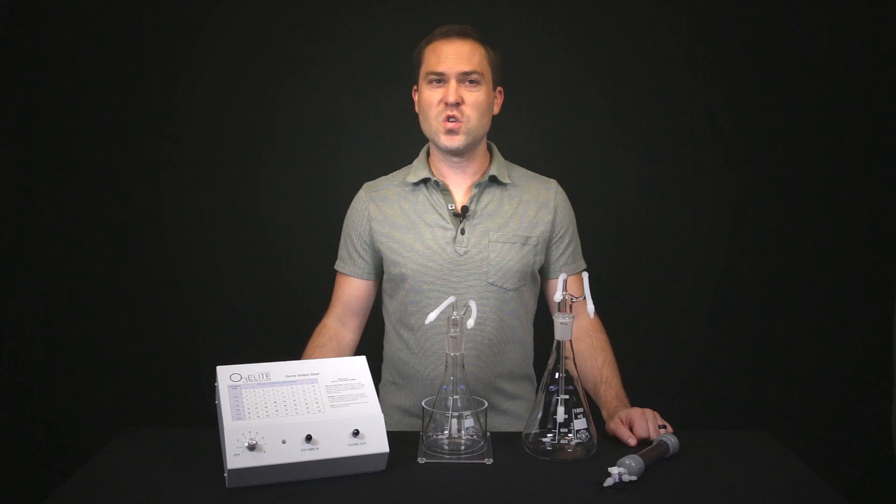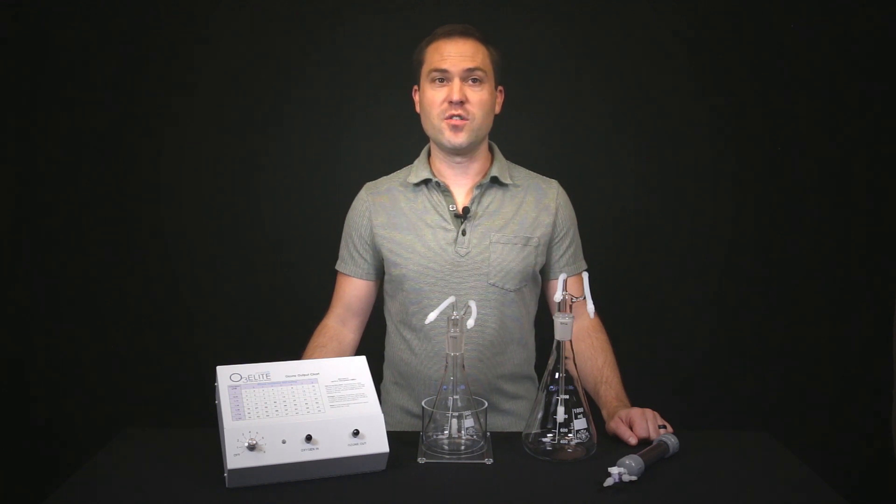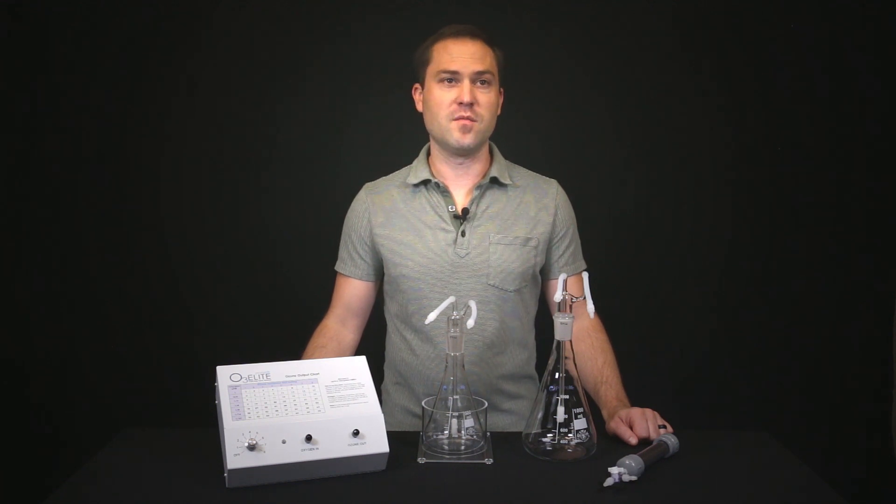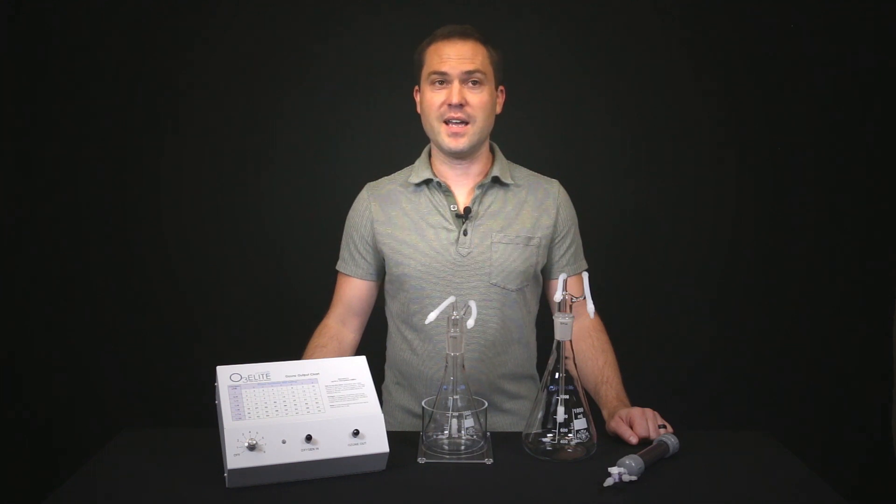For this combo, your ozone humidifier bubbler jar will either be 1000 ml or 500 ml. The 500 ml jar will also include a stand.